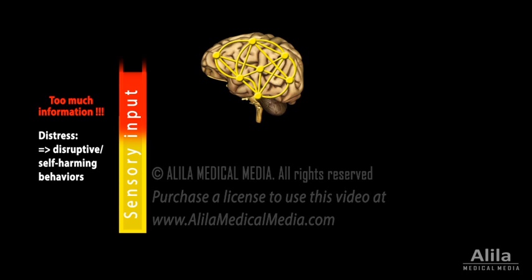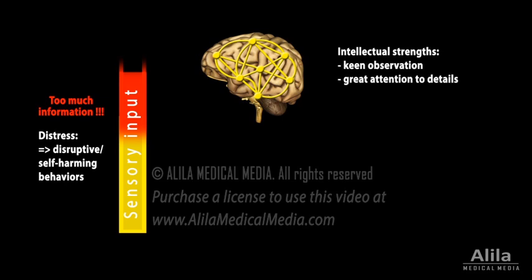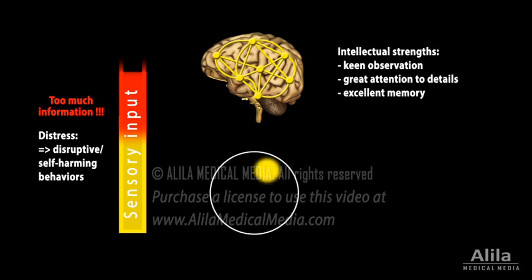On the other hand, changes in brain wiring may also result in intellectual strengths such as keen observation, great attention to details, and excellent memory. People with autism often have intense interest in certain specific subjects and, if receiving proper guidance and support, may excel in a particular career.